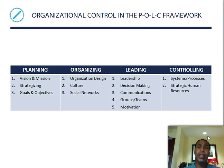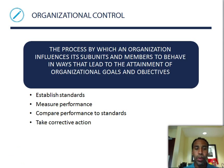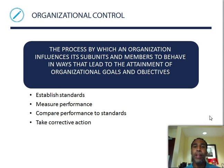As always, we have our planning, organizing, leading, and controlling framework. We're now down to our systems and processes, and lastly will be on strategic human resources. Organizational control is so very important — it is a process by which an organization influences its subunits and members to behave in ways that lead to the attainment of organizational goals and objectives.